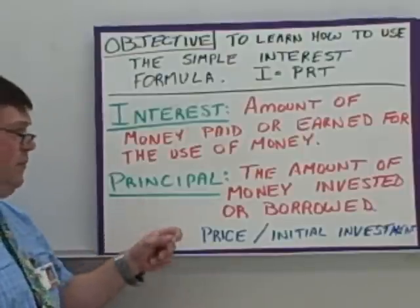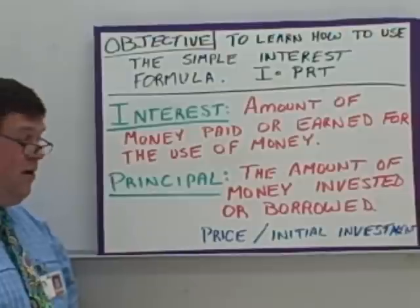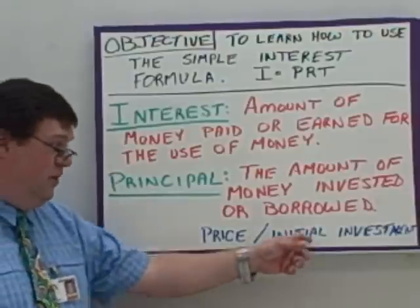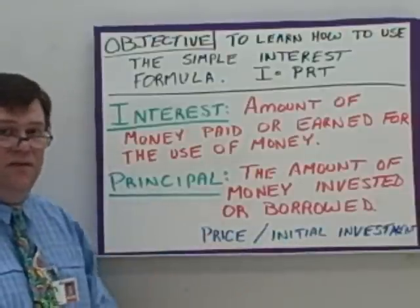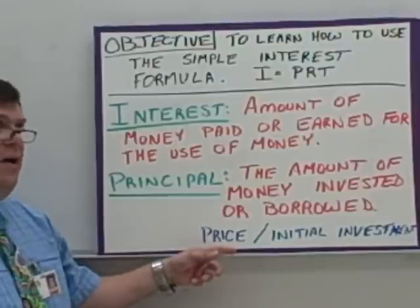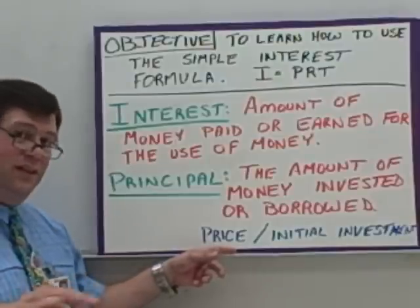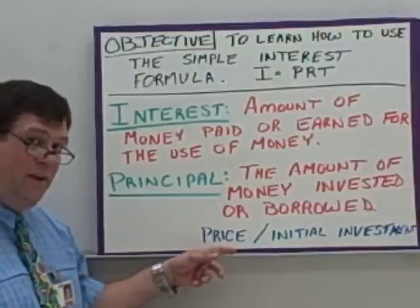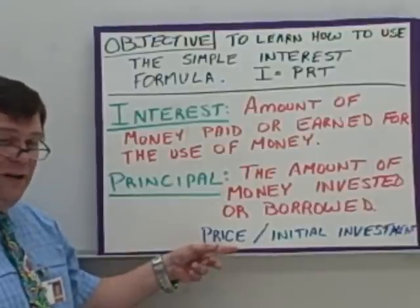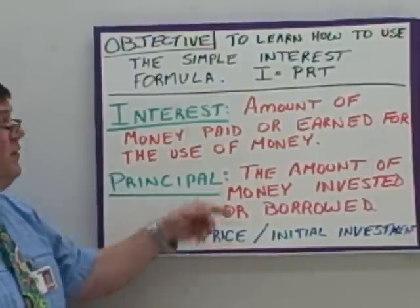The principal. Principal is the amount of money invested or borrowed. It's the initial amount — the initial invested, the initial borrowed. When you're talking about financing the entire price of something, you may even think of it as the price you're paying without the actual interest. It's the initial price.